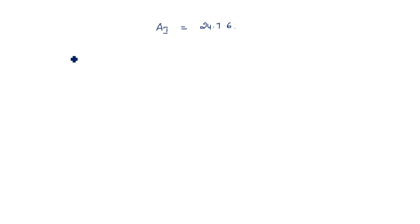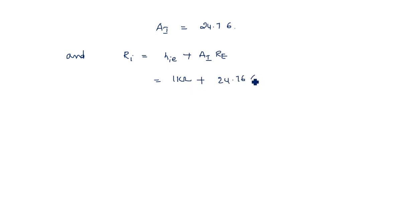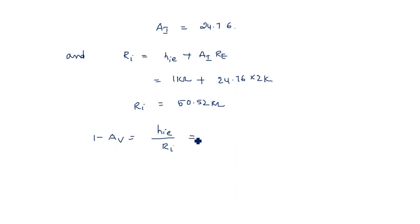The input resistance RE is equal to HIE + AI × RE. Substituting: 1 kilo ohm plus 24.76 times 2 kilo ohms gives RE equal to 50.52 kilo ohms. Then, (1 - AV) is equal to HIE / RE, which is 1 kilo ohm divided by 50.52 kilo ohms, giving 0.0198.